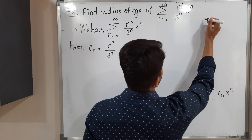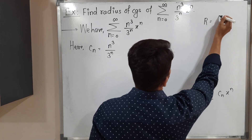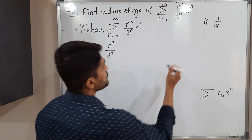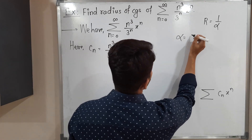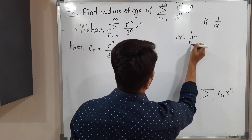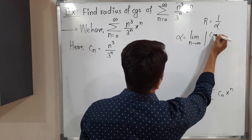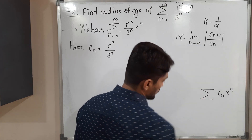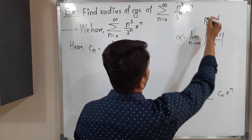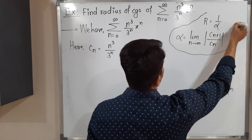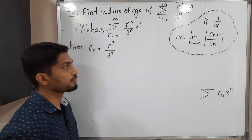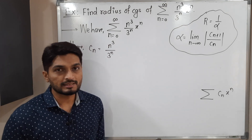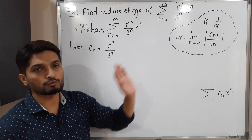The radius of convergence has the formula R equals 1 divided by α, where α is a constant calculated as: α equals the limit as n tends to infinity of |cₙ₊₁ divided by cₙ|. The reciprocal of α is the radius of convergence. For this problem I am going to use this formula.